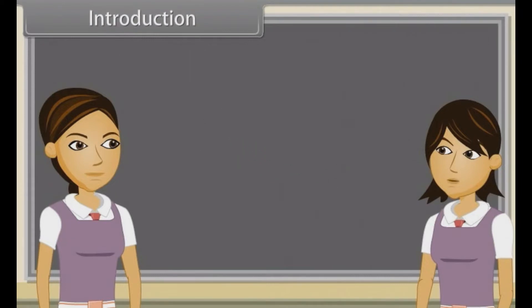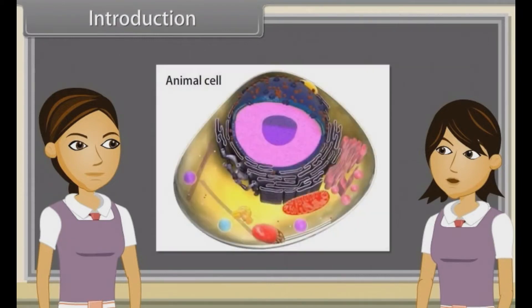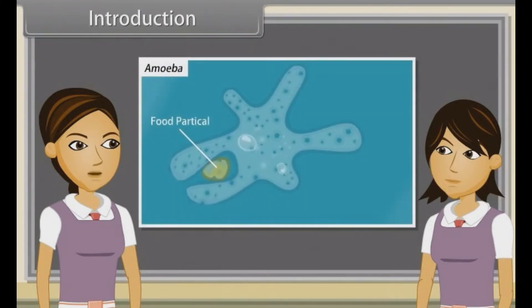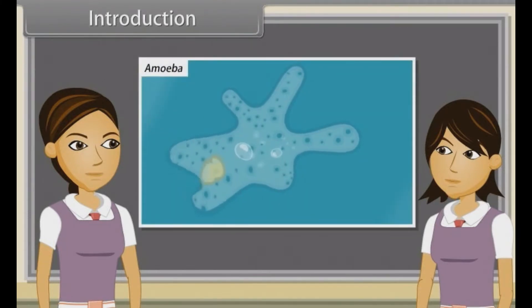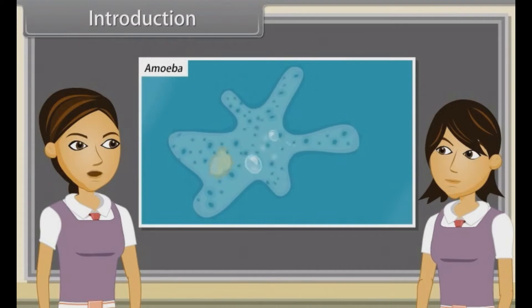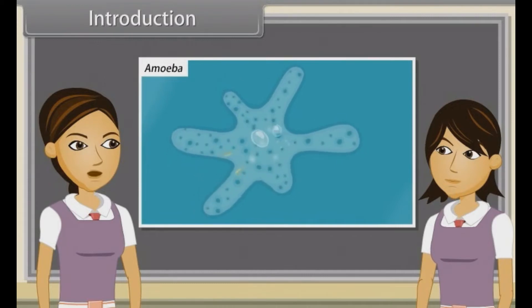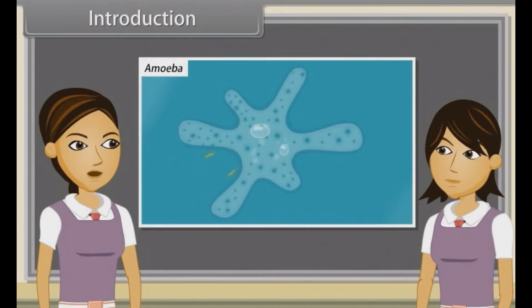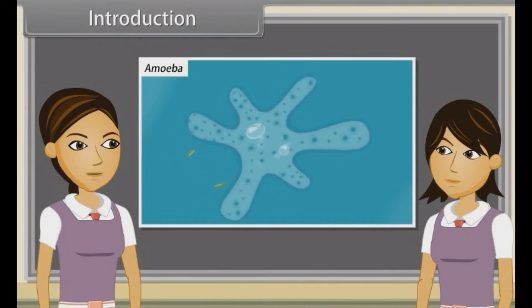Hey Ankita, we know that the cell is the structural and functional unit of life, but do you know what it actually means? It means a single cell can perform all basic functions of life — for example, movement, intake of food and respiratory gases, respiration and excretion. Yes, you are right. So come, let's start our new chapter: Cell the Unit of Life.